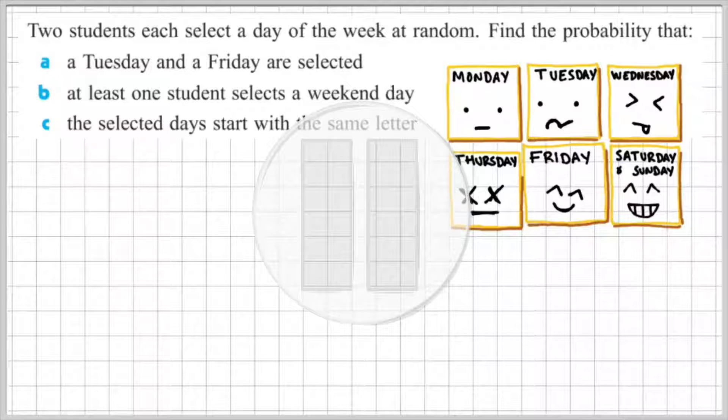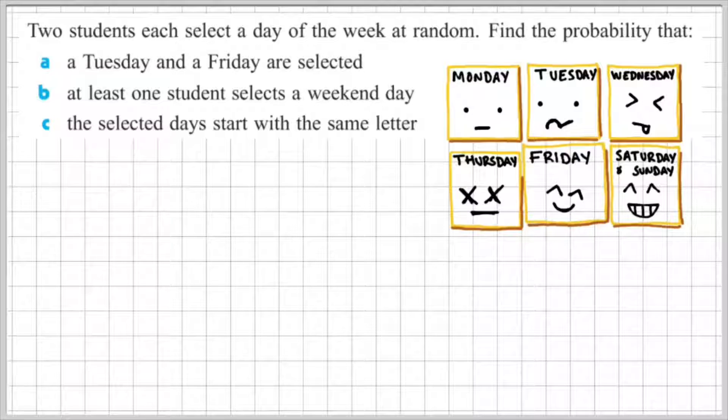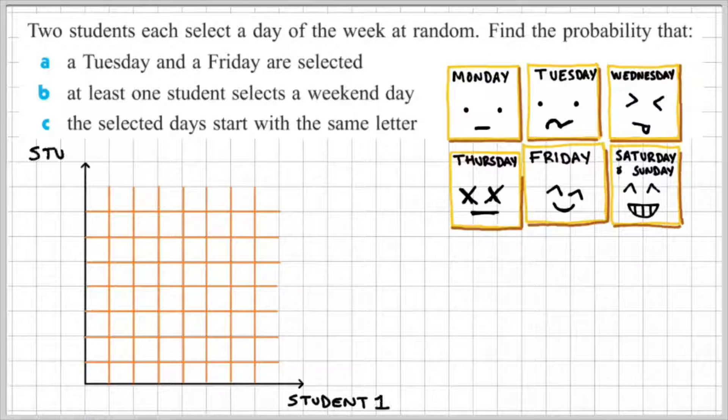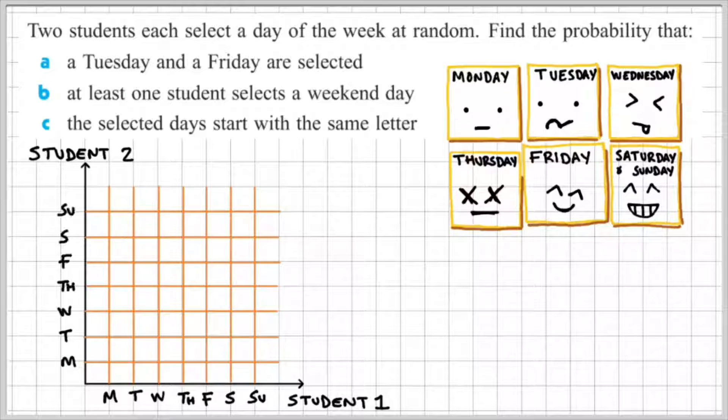So pause the video here and attempt it for yourself. When you're comfortable and you think you're done, press play and I'll show you my work solution. Okay, so before we do anything we have to do a two-dimensional grid. I'm going to label this Student 1 and Student 2, and then fill in all the possible outcomes. So we have Monday to Sunday for Student 1 and Monday to Sunday for Student 2. All these points represent the possible outcomes for this investigation.